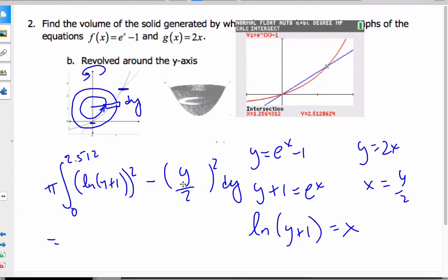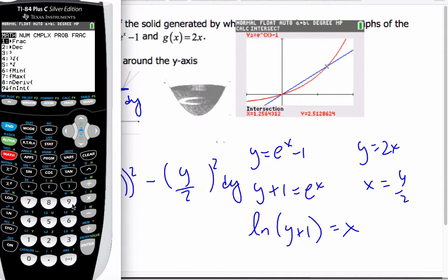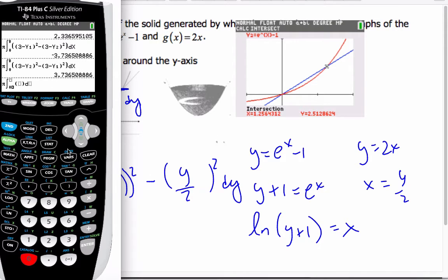I change my functions in terms of y. So again, I have to use my calculator. I'm going to switch my functions around. I'm going to start off with pi, number 9. I'm going to go from 0 to 2.51286. And it's going to go from open parenthesis, ln x plus 1, close parenthesis squared.